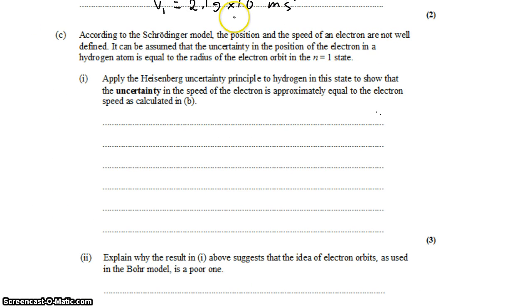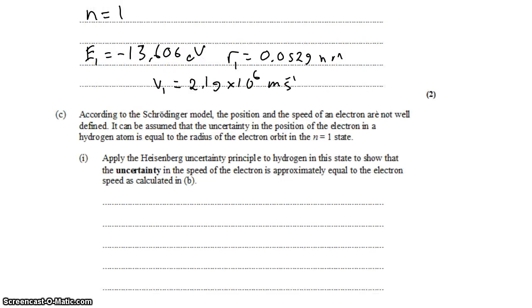In part c, it says according to the Schrödinger model, the position and speed of an electron are not well defined. It can be assumed that the uncertainty of the position of the electron in a hydrogen atom is equal to the radius of the electron orbit in the state n equals 1. So, apply the Heisenberg uncertainty principle to the hydrogen in the state to show that the uncertainty of the speed is approximately equal to that of the electron speed calculated above.